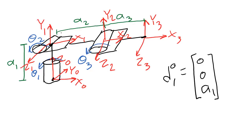The displacement vector does not always need to have the joint variable in it. As long as the displacement vector has been written in such a way that it is true no matter what the value of the joint variable is, you have the correct displacement vector.